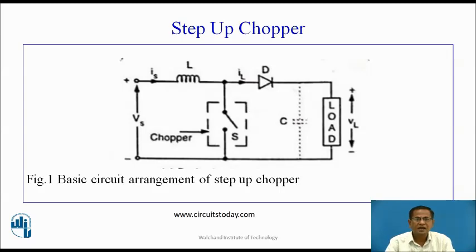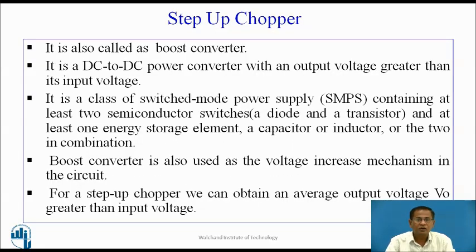This is the basic arrangement of a step-up chopper. The dotted rectangle represents the chopper switch, which consists of a power device with an internal firing circuit plus commutation circuit. It is also called a boost converter — a DC to DC power converter with an output voltage greater than its input voltage. It is a class of SMPS (switched mode power supply). The output circuit contains at least two semiconductor switches — a diode and a transistor — and at least one energy storage element: a capacitor or inductor.